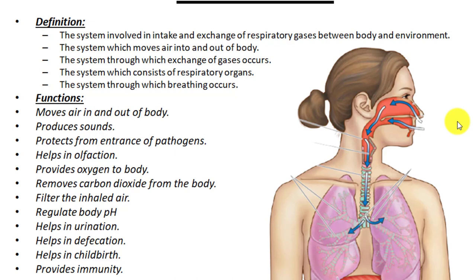When we breathe, we use our nose, mouth, pharynx, larynx, trachea, lungs, and alveoli. So the system through which breathing occurs, the system which consists of respiratory organs, and the system through which exchange of gases occurs — all describe the respiratory system.